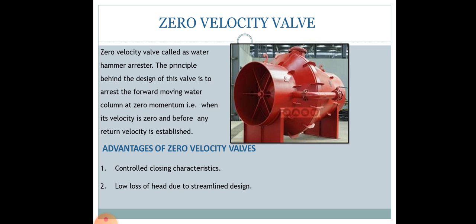Zero velocity valves are also called water hammer arrestors. The main principle behind the design of this valve is to arrest the forward-moving water column at zero momentum — that is, when its velocity is zero — and before any return velocity is established. That is why it is called the zero velocity valve. Its main advantages are controlled closing characteristics and low loss of head due to its streamlined design.